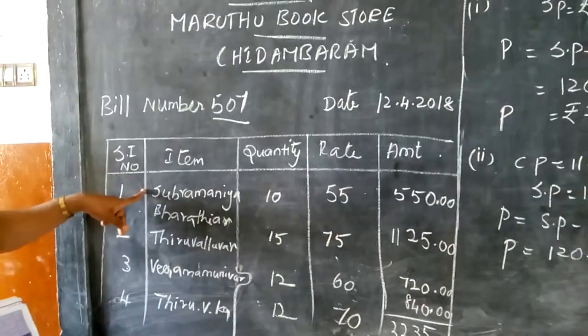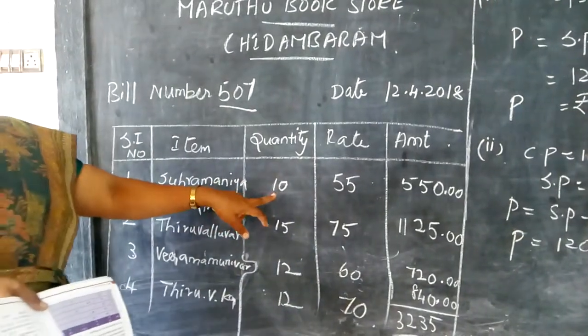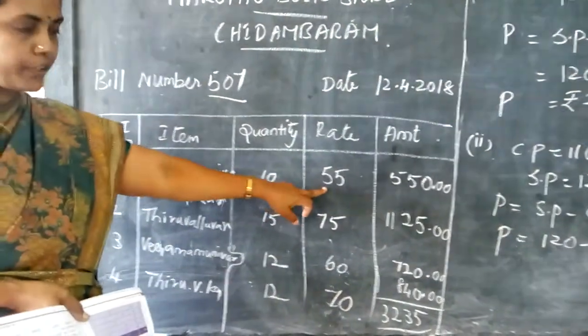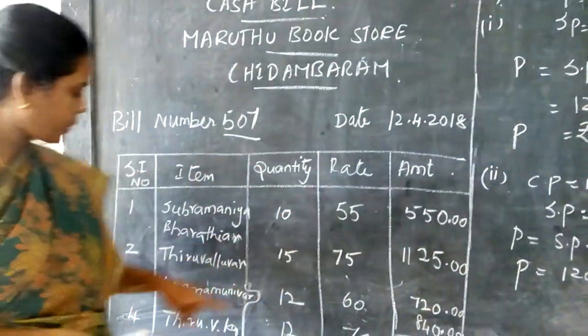Then serial number. Subramanya Bharatiya, the books. How many quantities they have purchased. They have purchased 10 quantities for the rate of 55 rupees. Each is 55. So 10 into 55 is 550.